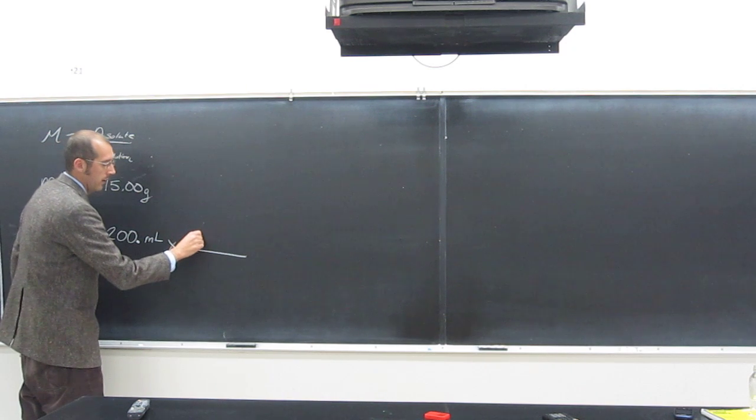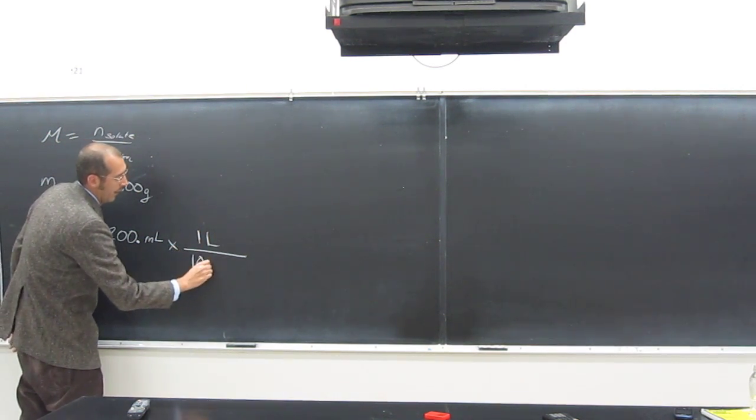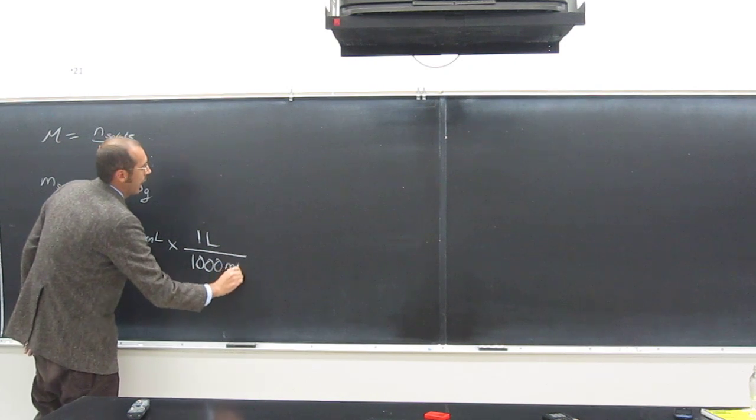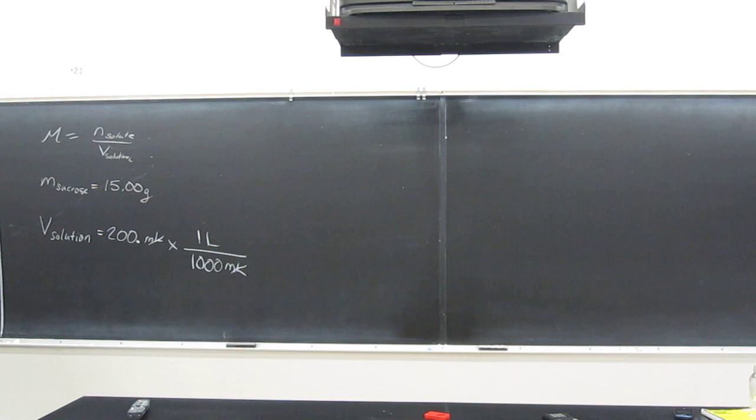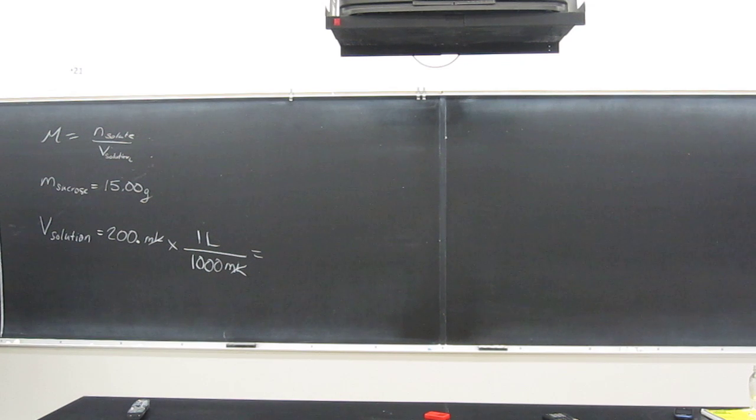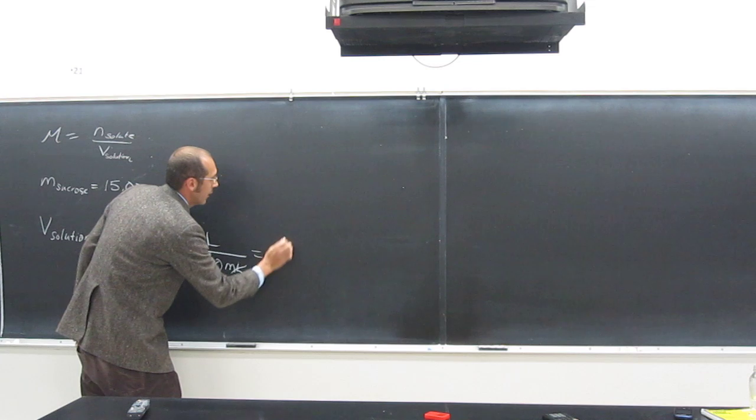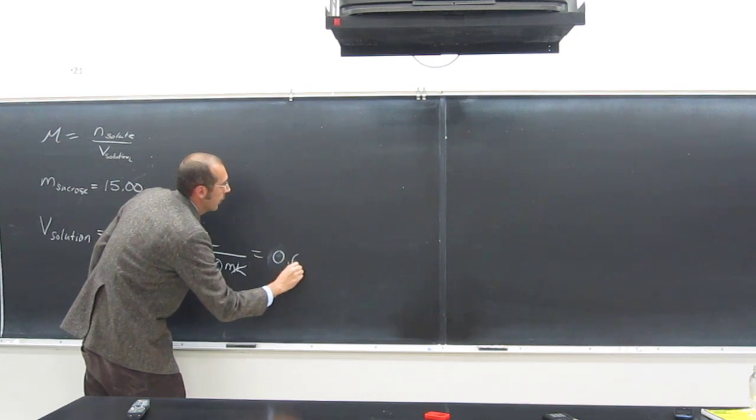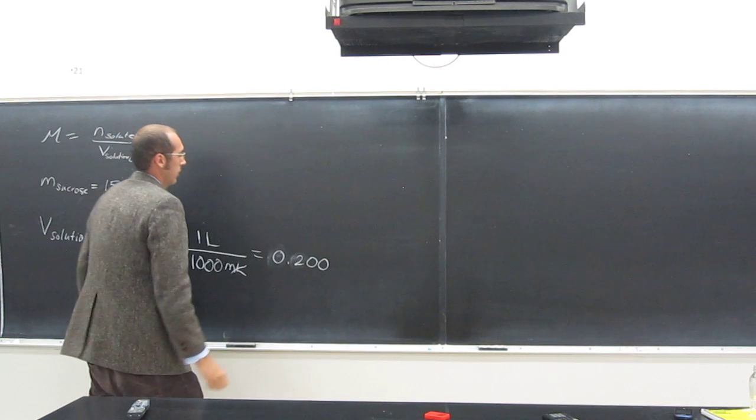We can do that fairly easily by multiplying that by the conversion factor that we all know. What do we put on top here? One liter. And down here? Very good, guys. 1,000 milliliters. Convert, or cancel, cancel, and what do you get? Yeah, we can do it that way. 0.200.